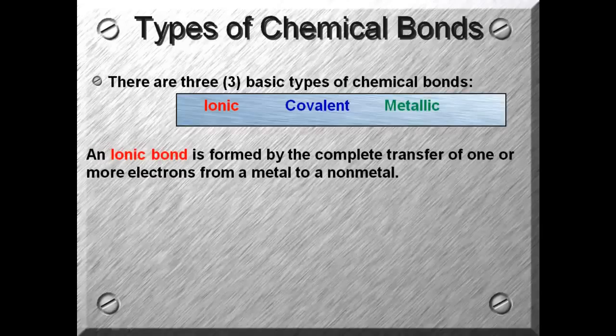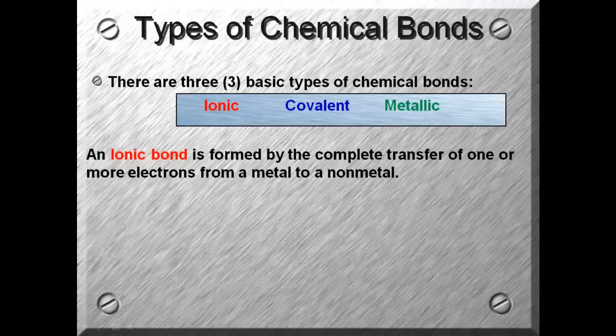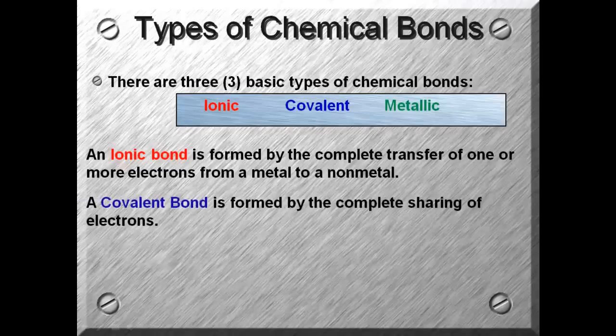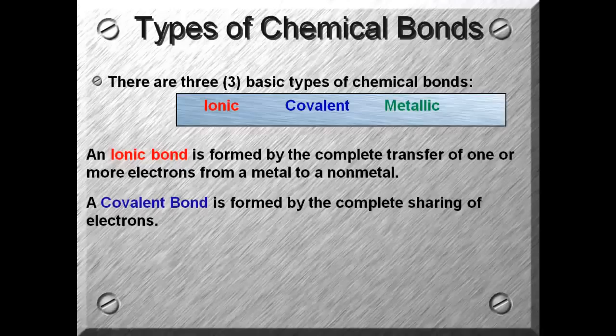An ionic bond is formed by the complete transfer of one or more electrons from a metal to a nonmetal. So ionic bonds will be between a metal and a nonmetal. A covalent bond is formed by the complete sharing of electrons. A covalent bond will form between two nonmetal elements.